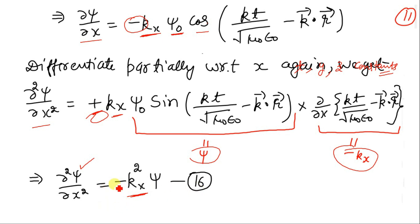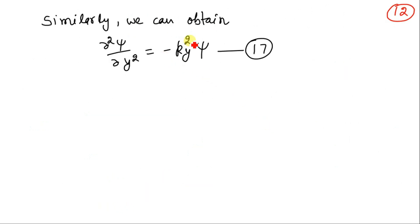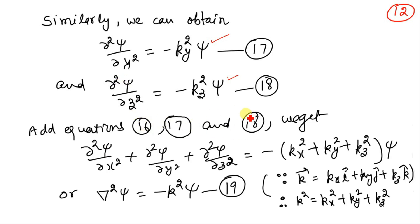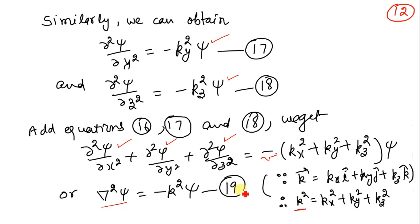We have found the second-order partial derivative of psi with respect to x. By the same process, ∂²ψ/∂y² = −ky²ψ and ∂²ψ/∂z² = −kz²ψ. Adding equations 16, 17, and 18, the left-hand side becomes ∇²ψ (i.e., ∂²ψ/∂x² + ∂²ψ/∂y² + ∂²ψ/∂z²), and the right-hand side gives −(kx² + ky² + kz²)ψ, which equals −|k|²ψ. Equation 19 thus gives us the expression for ∇²ψ.